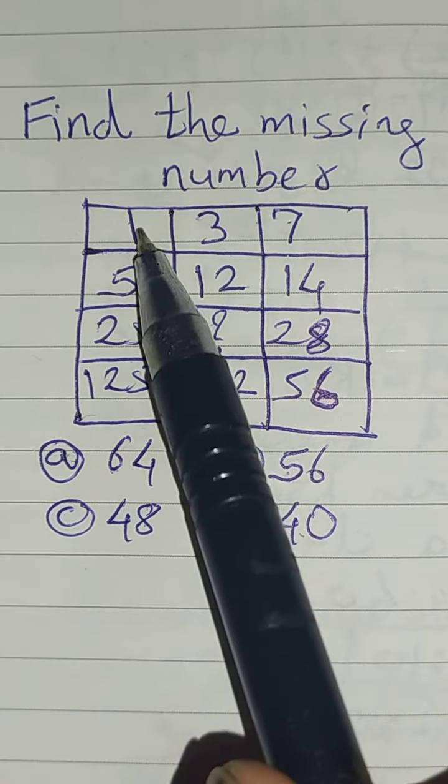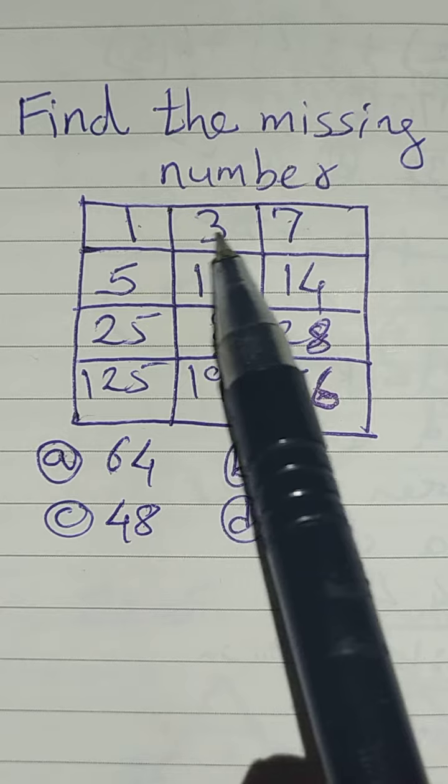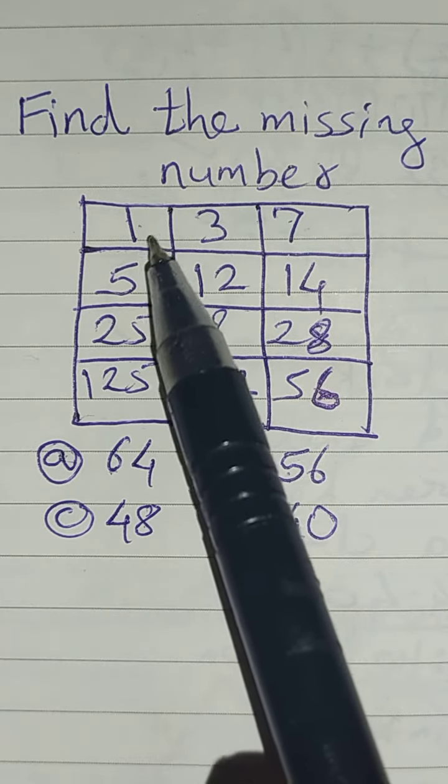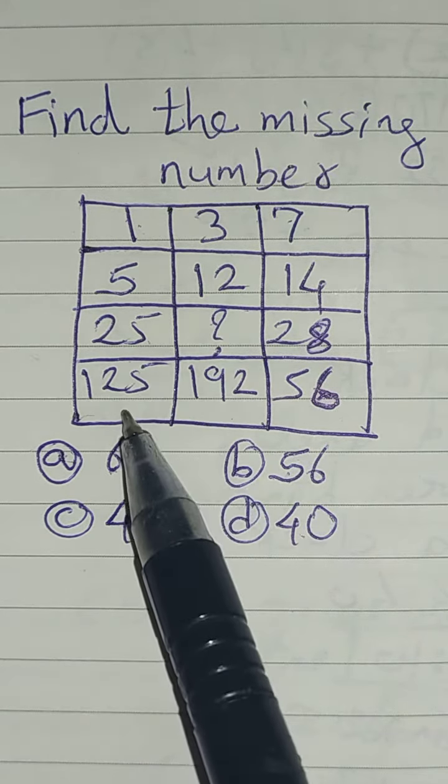Now this is 1, 3, 7. There is no relation. But if you see in this way: 1, 5, 25, 125. Yes, there is some relation.